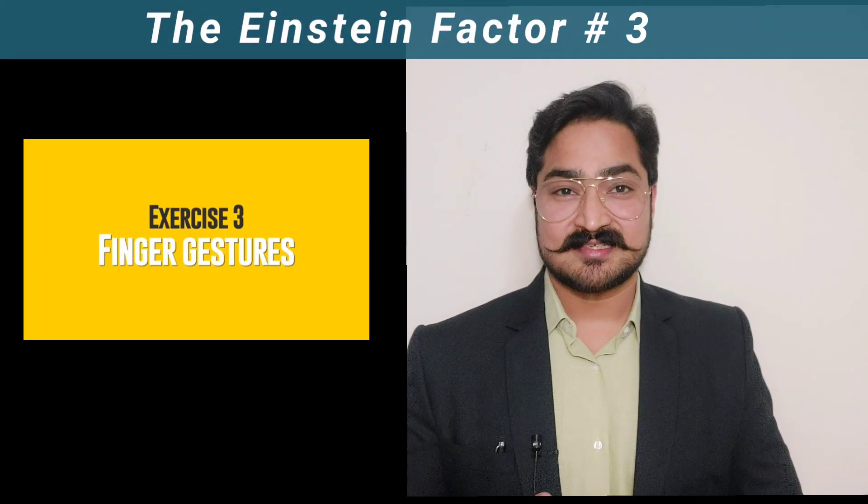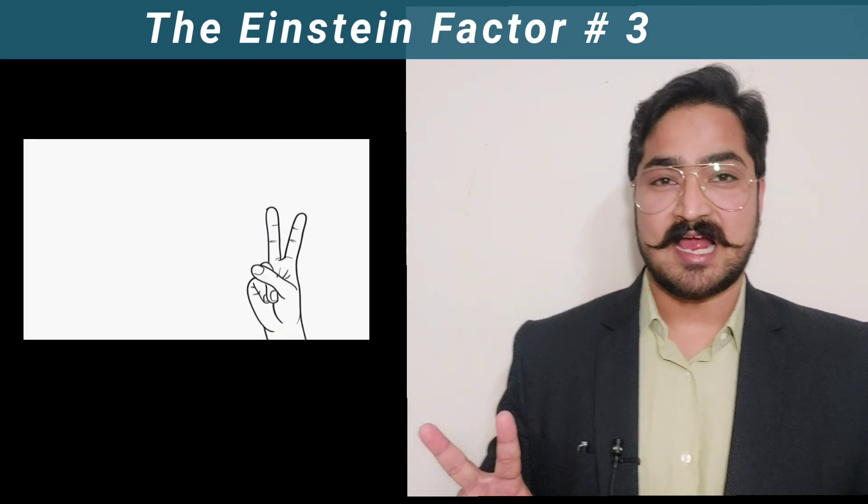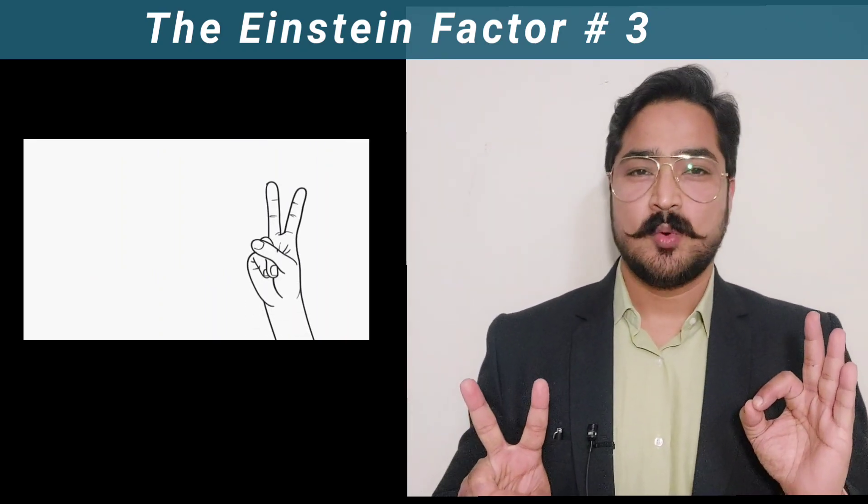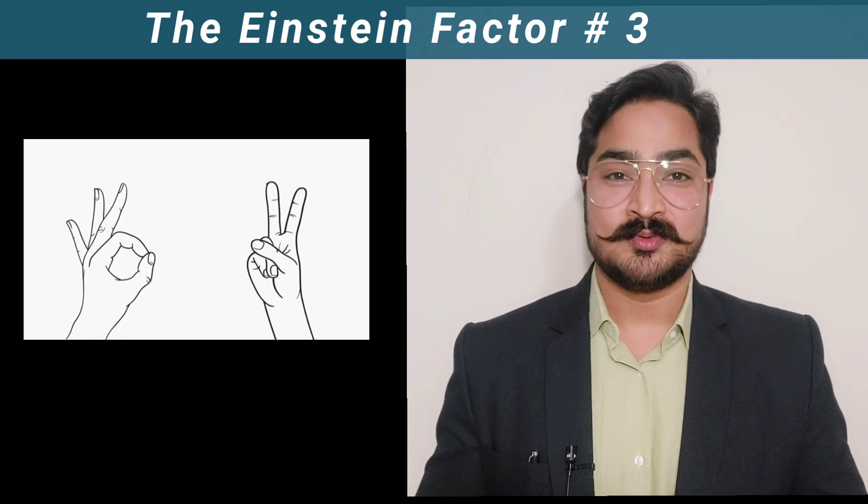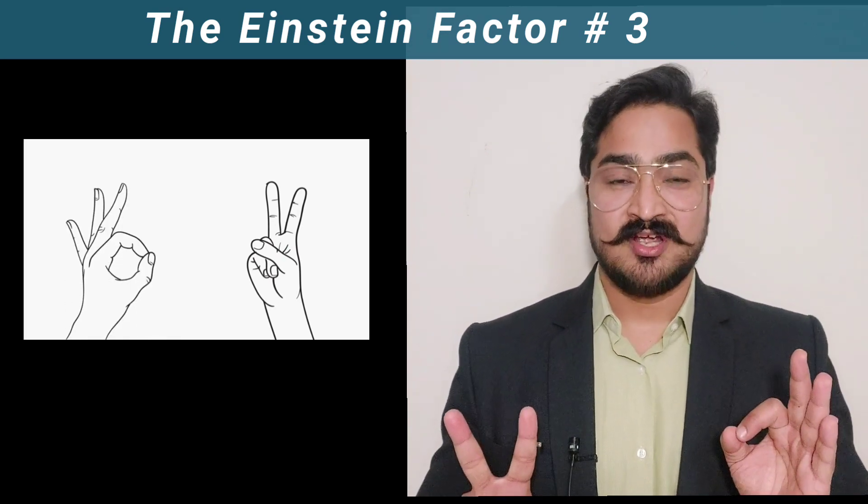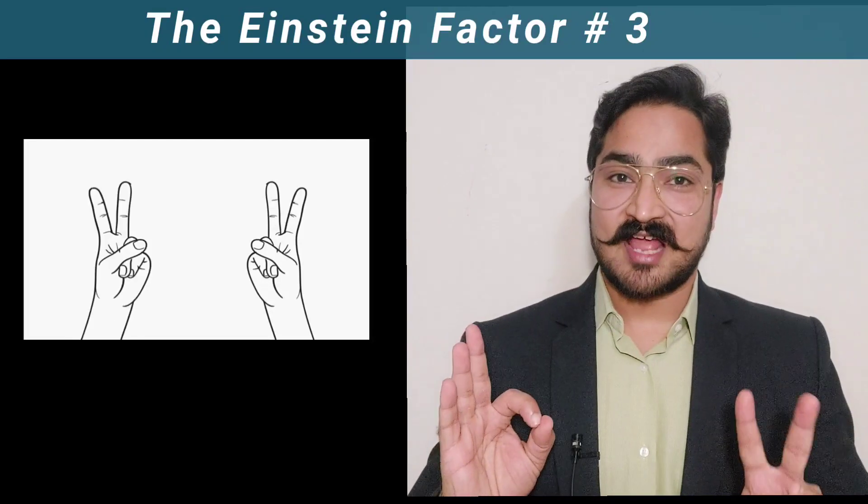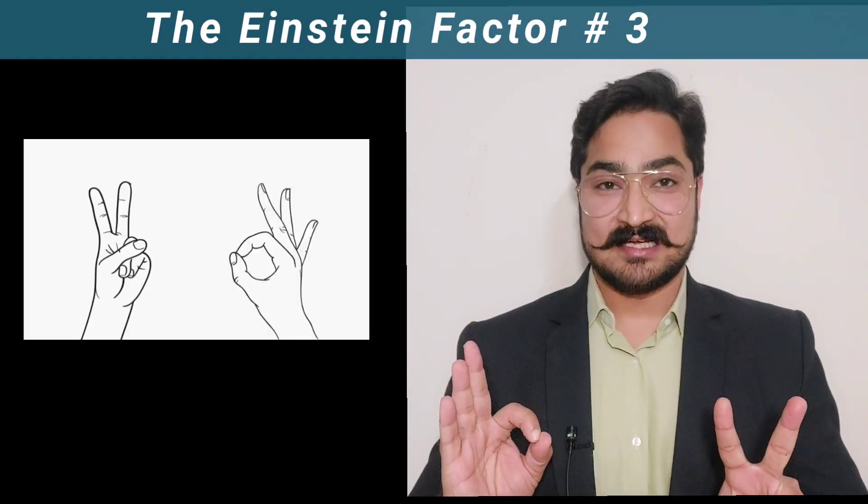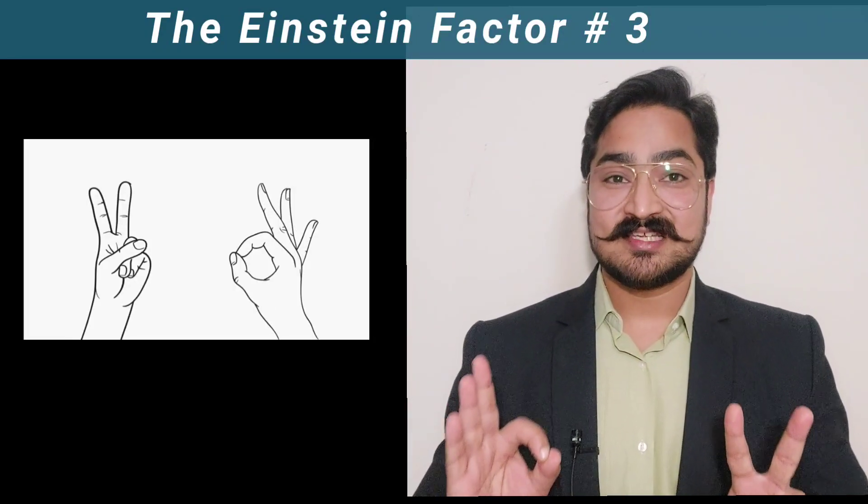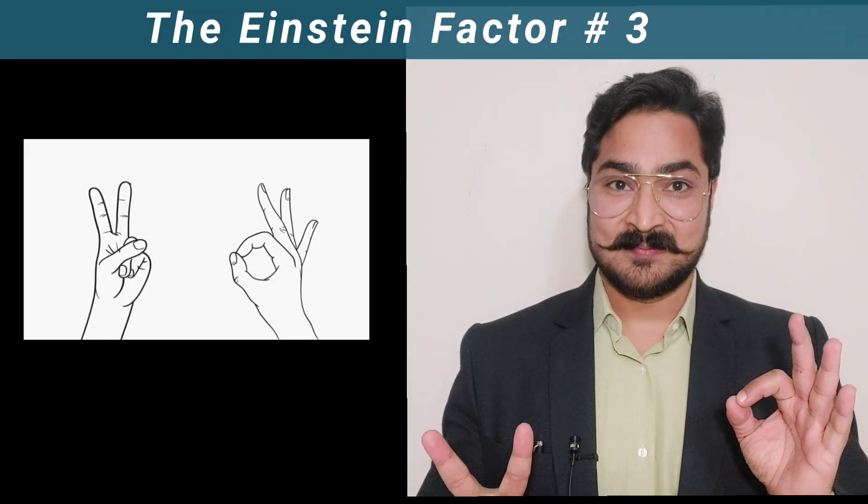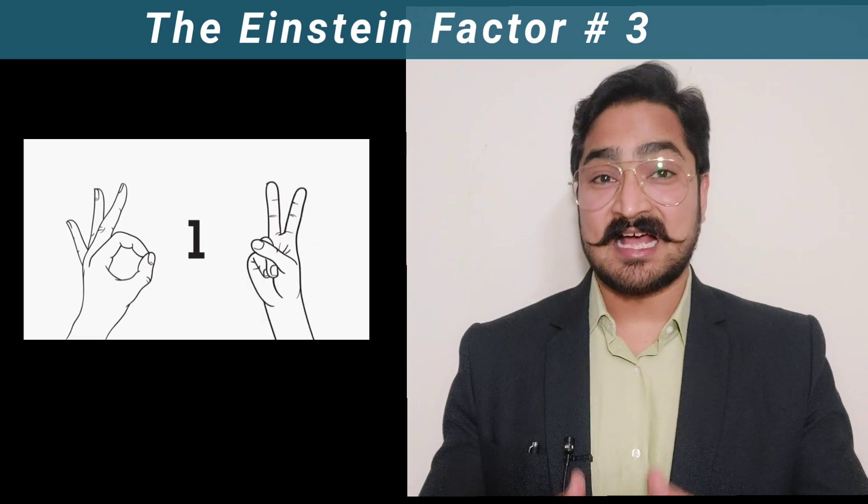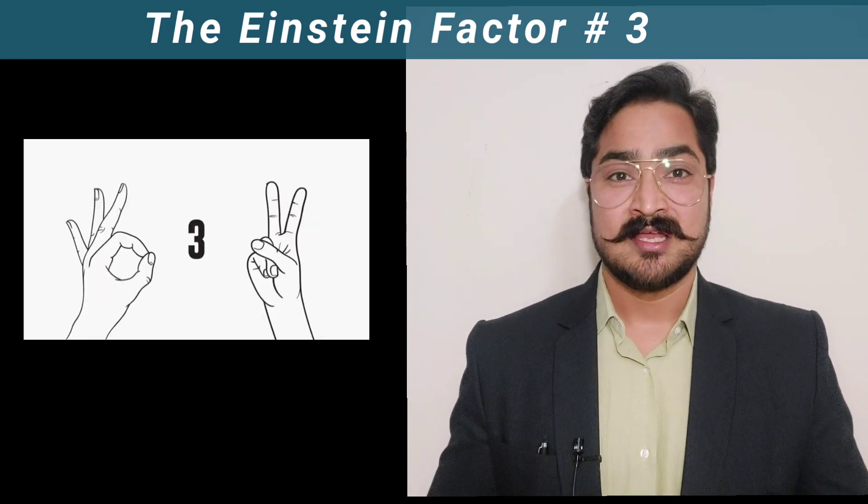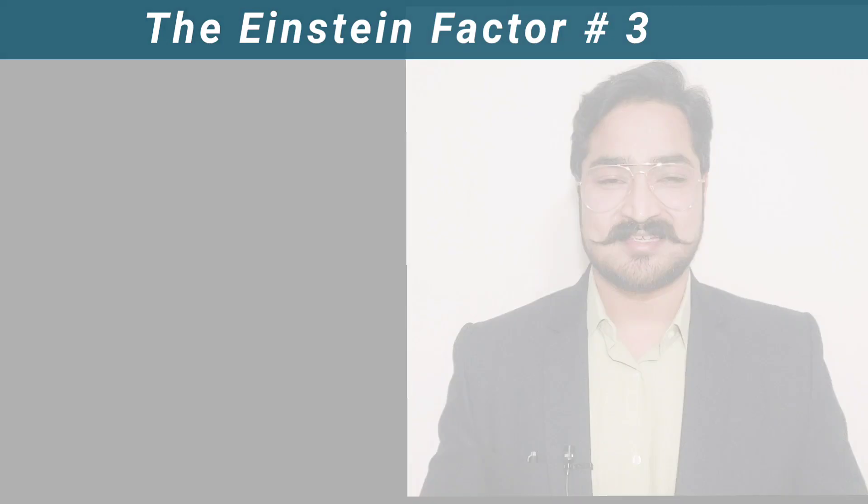In the third exercise, I want you to make a peace sign with one hand and an okay sign with the other hand. After that, I want you to quickly switch from one hand to another hand without failing. You need to do this simultaneously without mistake, consecutively, as fast as possible. Give it a try and I'll meet you after this exercise.